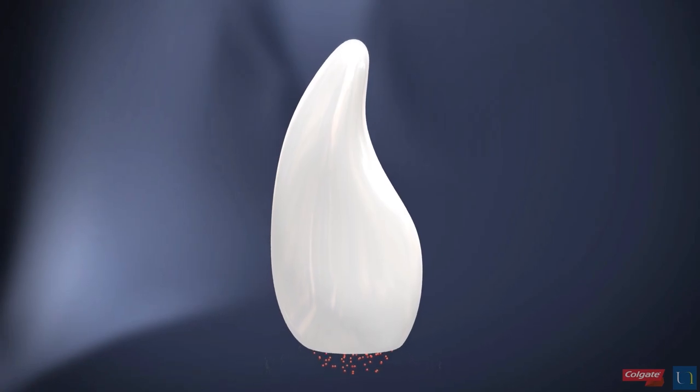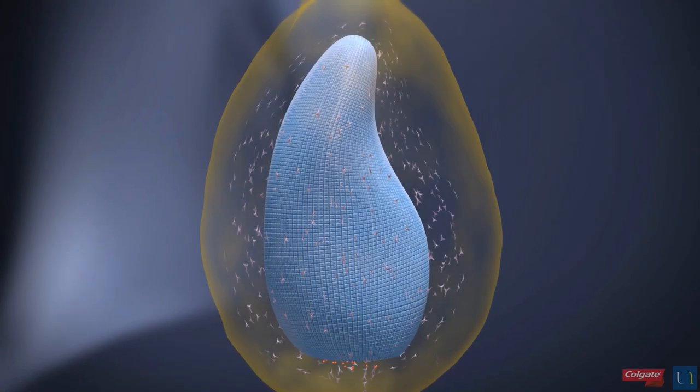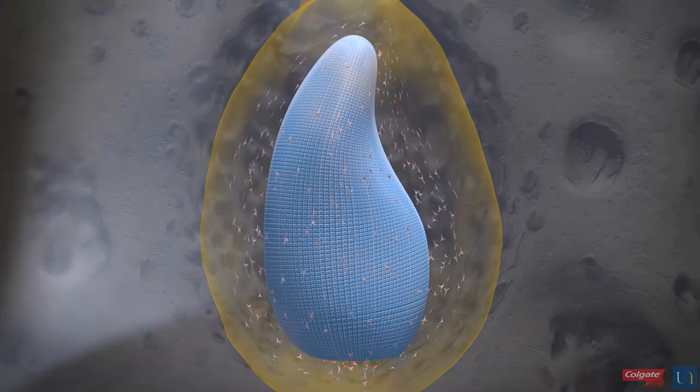At the end of the crown stage, the enamel is completely formed. It is covered by the reduced enamel epithelium that protects the enamel of the dental follicle. All this is lodged within the brain crypt.